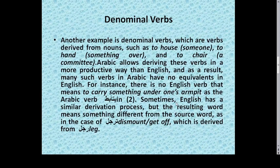Another example is denominal verbs, which are verbs derived from nouns, such as to house someone, to hand something over, and to chair a committee. Arabic allows deriving these verbs in a more productive way than English, and as a result many such verbs in Arabic have no equivalence in English. For instance, there is no English verb that means to carry something under one's armpit.